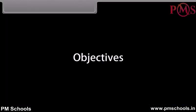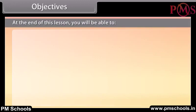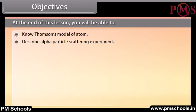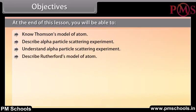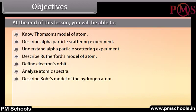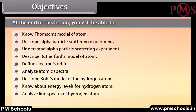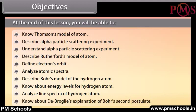Objectives. At the end of this lesson you'll be able to: know Thomson's model of atom; describe and understand the alpha particle scattering experiment; describe Rutherford's model of atom; define electron orbits; analyze atomic spectra; describe Bohr's model of the hydrogen atom; know about energy levels of hydrogen atom; analyze line spectra of hydrogen atom; and know about De Broglie's explanation of Bohr's second postulate.